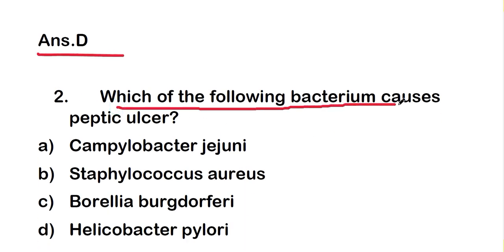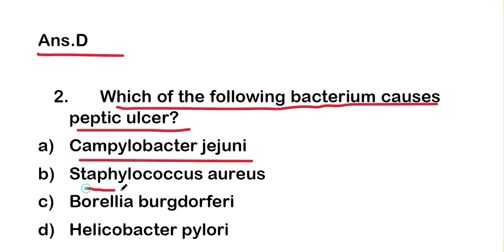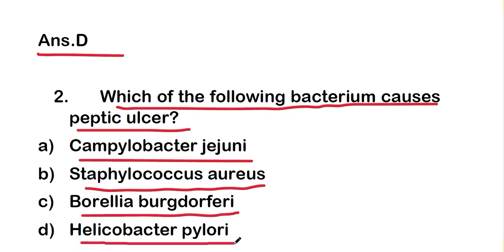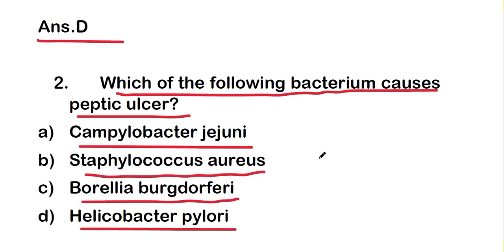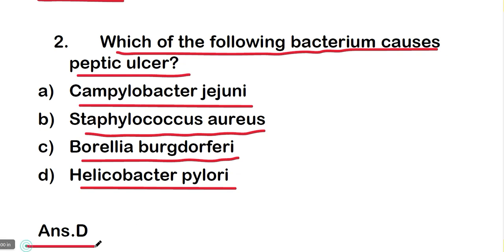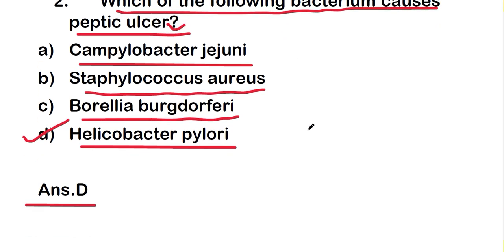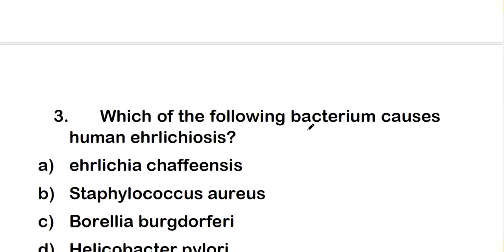The next question is: which of the following bacterium causes peptic ulcer? The options are Campylobacter jejuni, Staphylococcus aureus, Borrelia burgdorferi, or Helicobacter pylori. The right answer is option D — Helicobacter pylori — which is the bacterium that causes peptic ulcer.